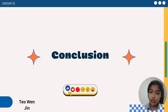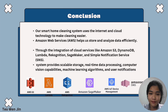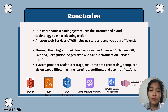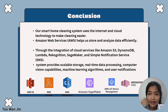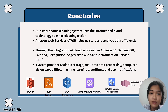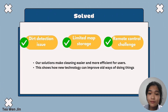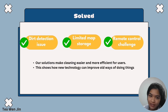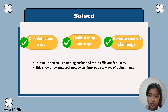In conclusion, our Smart Home Cleaning System uses the internet and cloud technologies to make cleaning easier. We use Amazon Web Services, and it helps us to store and analyze data efficiently. Through the integration of cloud services like Amazon S3, DynamoDB, Lambda, Rekognition, SageMaker, and Simple Notification Service, our system provides scalable storage, real-time data processing, computer vision capability, and machine learning algorithms. Our team successfully addressed the problem statements mentioned before, including limited map storage and remote control challenges. Our solutions make cleaning easier and more efficient for users, showing how new technology can improve old ways of doing things.